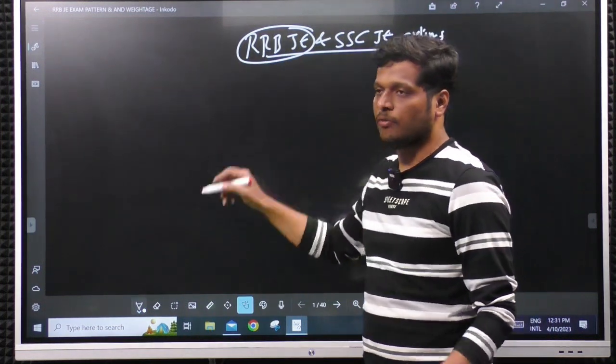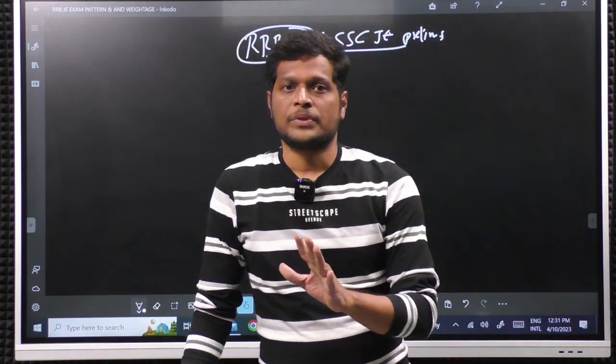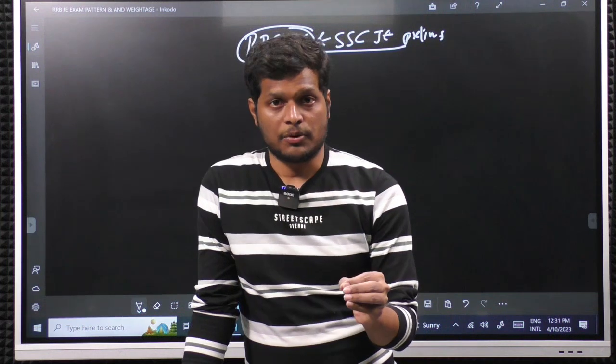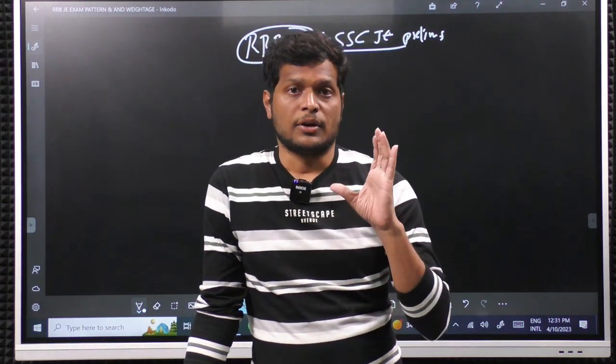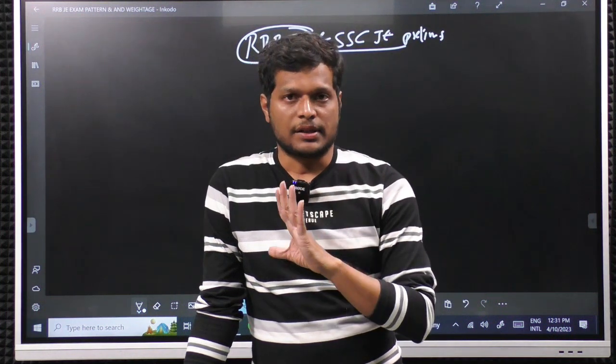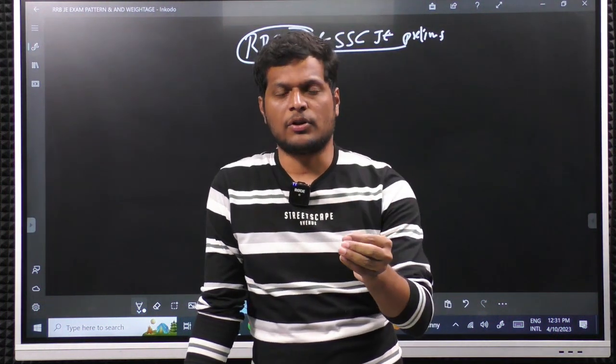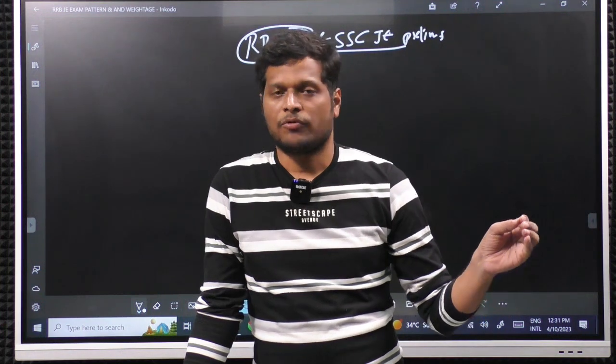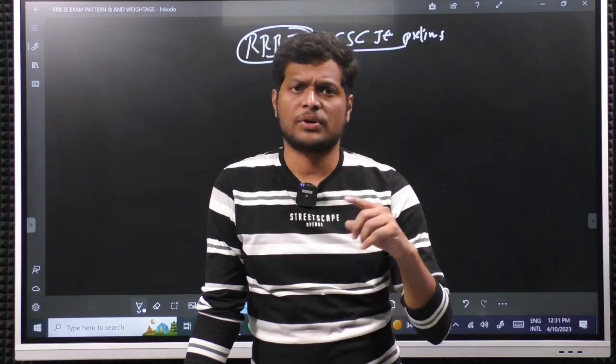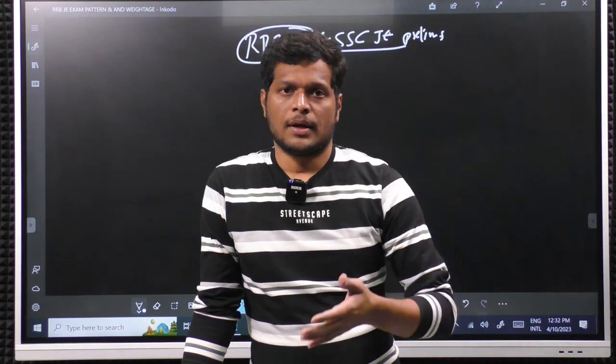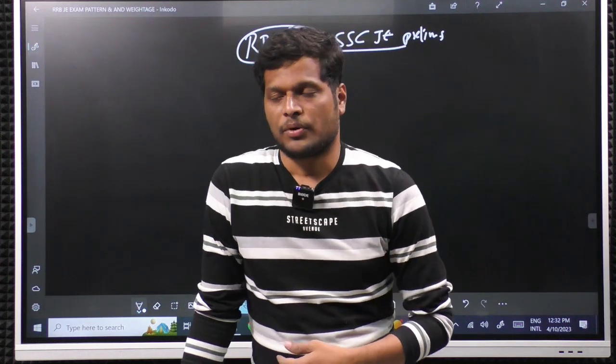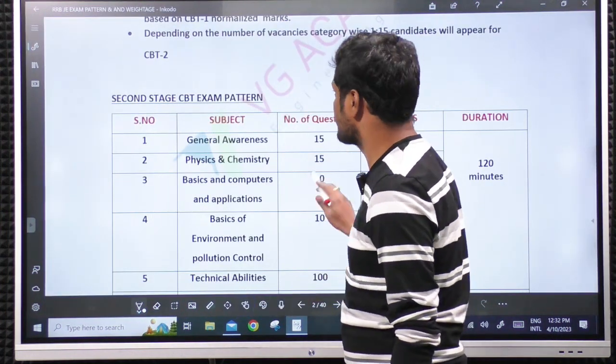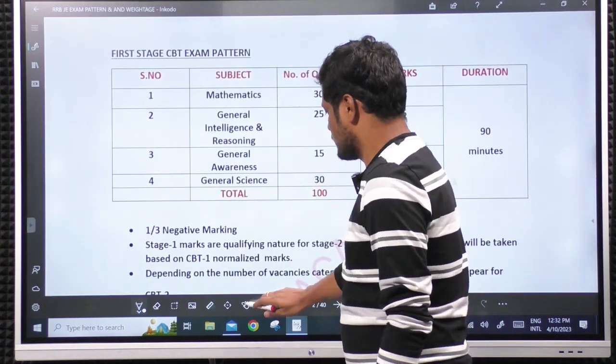In this course, we will be covering RRBJE mains and SSEJE prelims. Because RRBJE CBT-1, whatever prelims we call, we do not have civil engineering syllabus in this. Previous CBT-1 questions, whatever we have around 3500 questions, I have typed and divided into subject-wise. Complete 3500 set of questions, subject-wise questions, I am giving you a PDF in this video description. I have created a separate telegram group for central government jobs, I am attaching the link as well. I will upload the same in telegram group. You can join and download there or directly download from the link we are providing here.